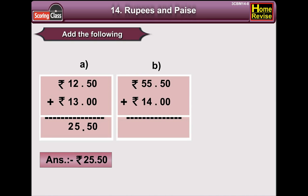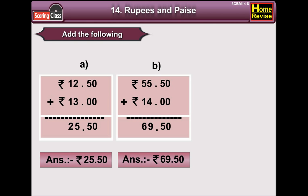B: Rupees 55, 50 paisa plus rupees 14. Again, 0 plus 0 is 0, 5 plus 0 is 5, 5 plus 4 is 9, 5 plus 1 is 6. So the answer is rupees 69, 50 paisa.